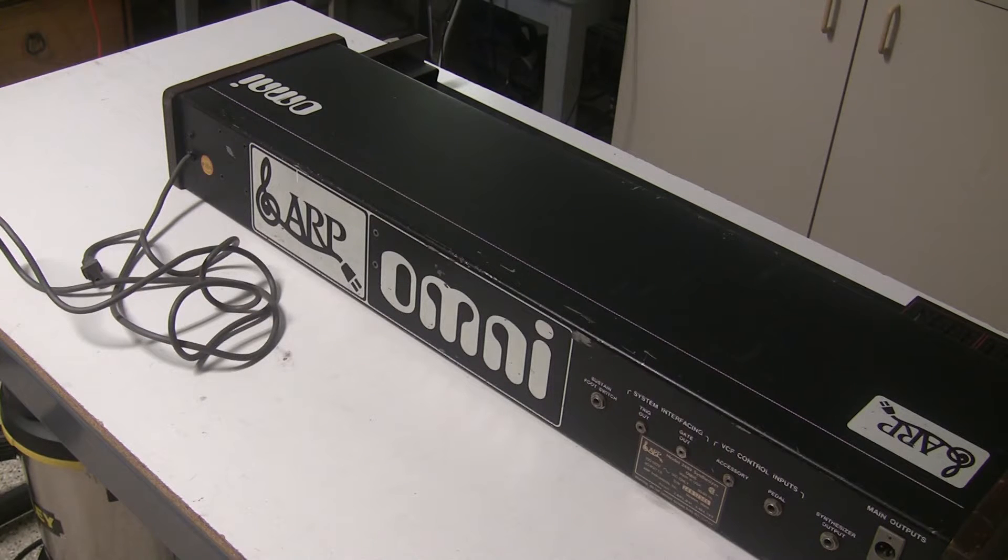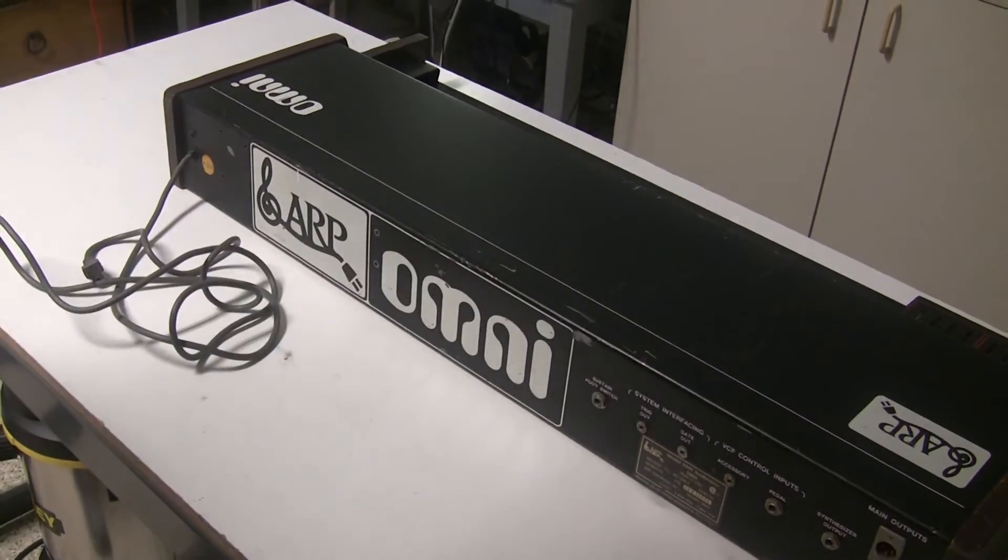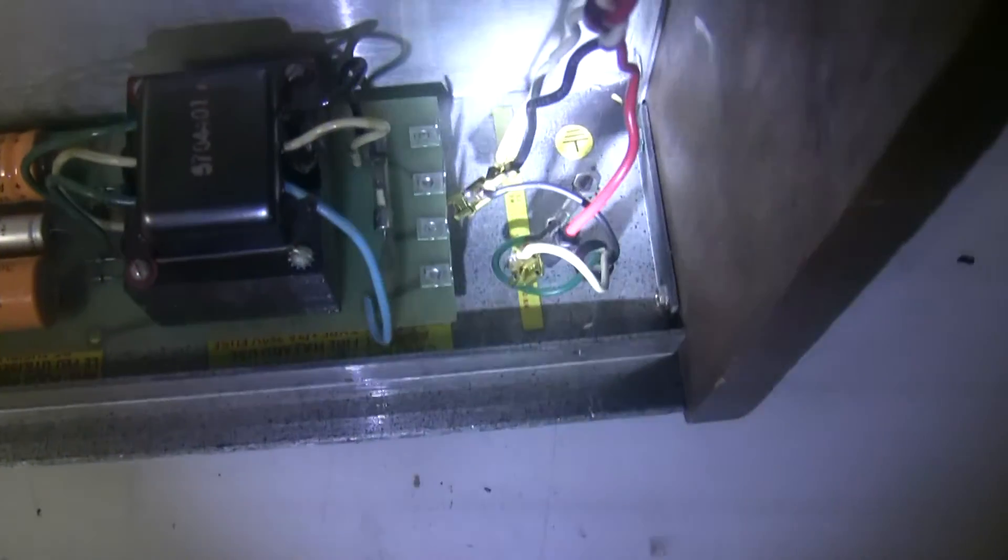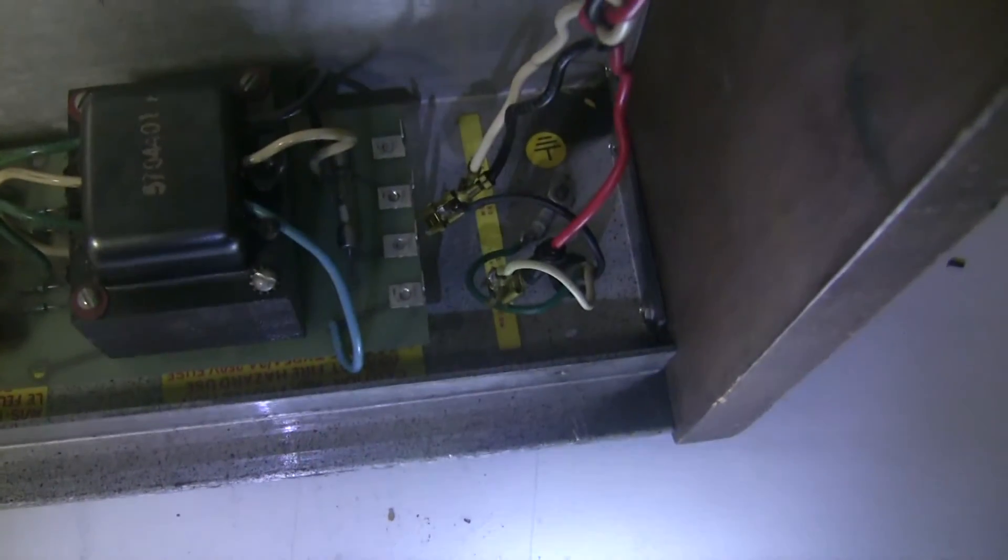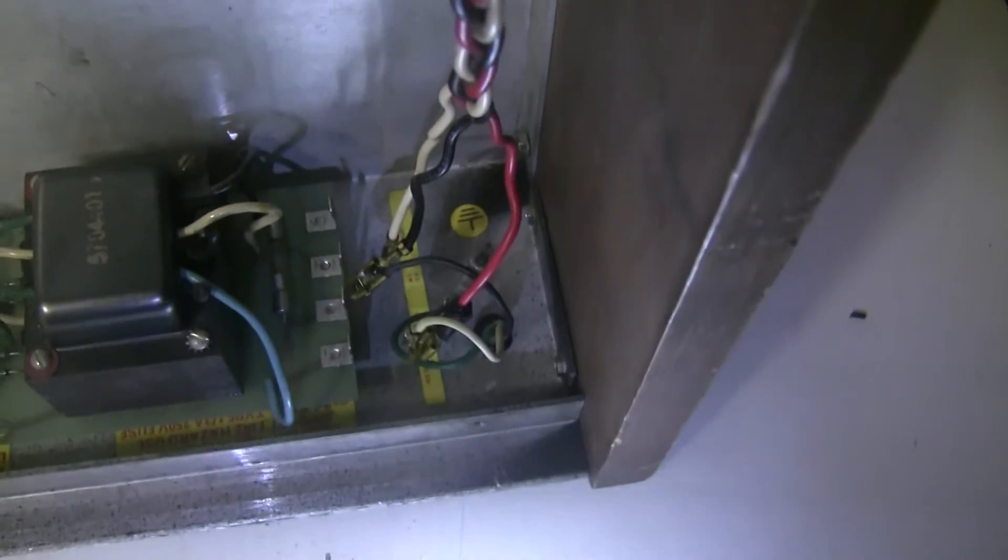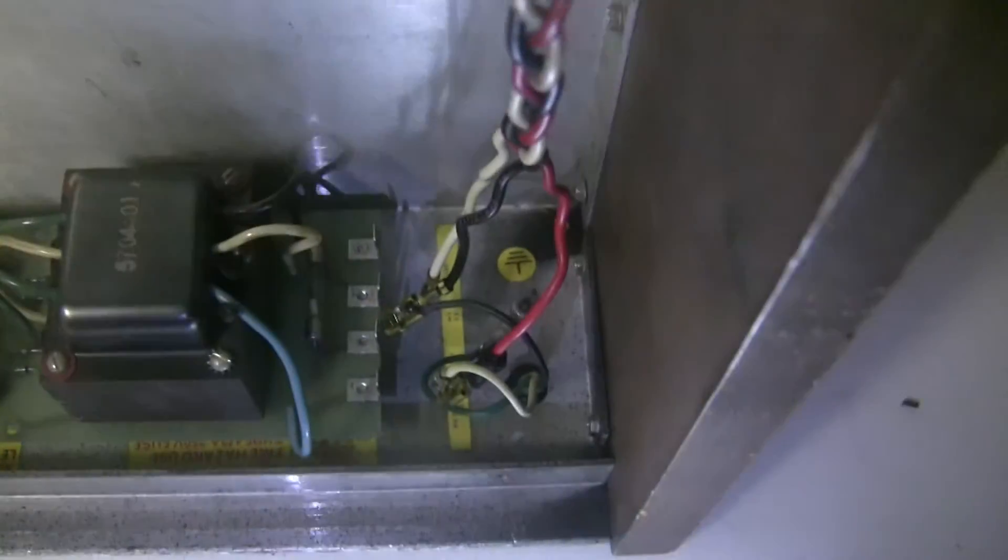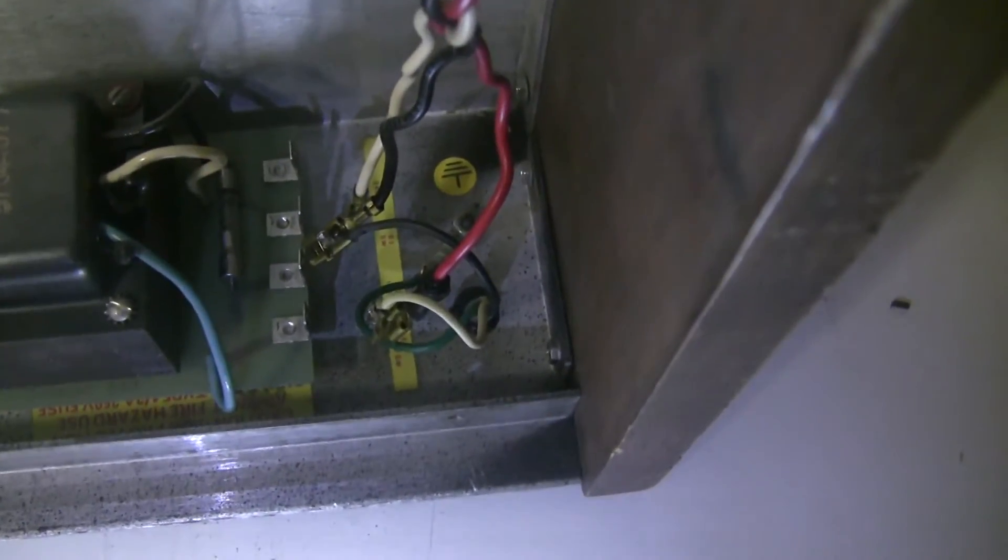The first thing I'm going to do is take the power supply out of the upper portion of the case. In taking the power supply out, I noticed a couple of things. For starters, this yellow label on the back of the case that shows where these wires from the power cord and switch are to be plugged in is usually on the power supply board itself. Someone had removed that sticker and put it on the back of the case, which reversed the order that they should go.